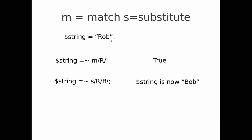We use 'm' for match and 's' for substitute. So if we start with a simple string like 'Rob' and we say match capital R — that's true. If we say s/R/B/ — that means substitute a capital R for a capital B — our string now becomes 'Bob'.